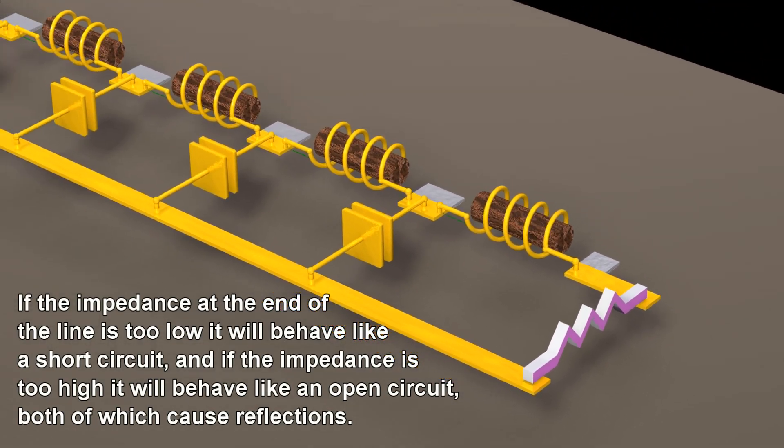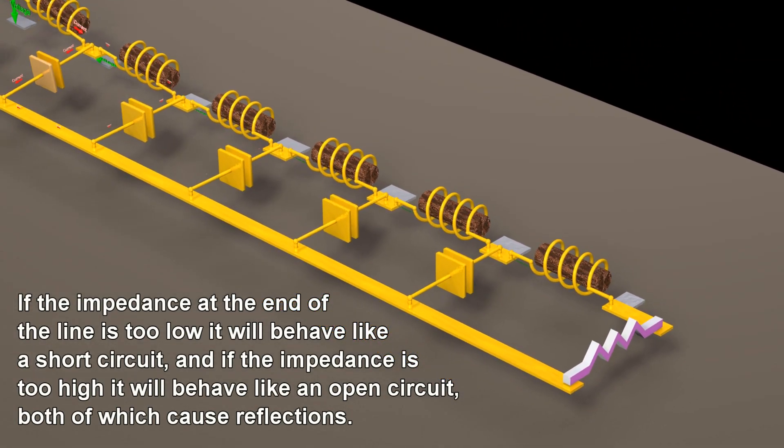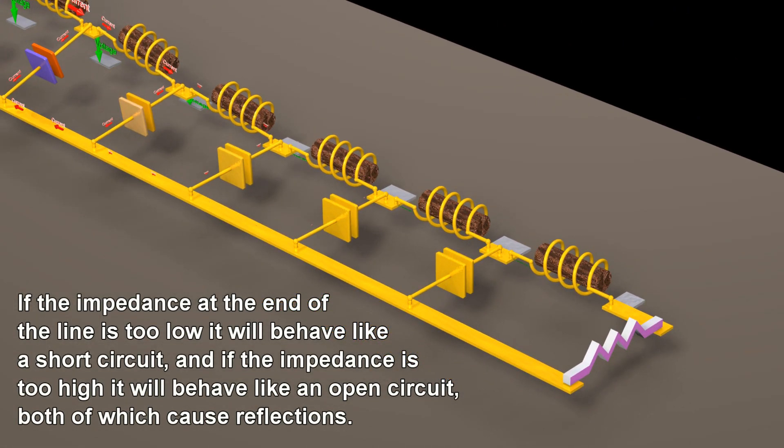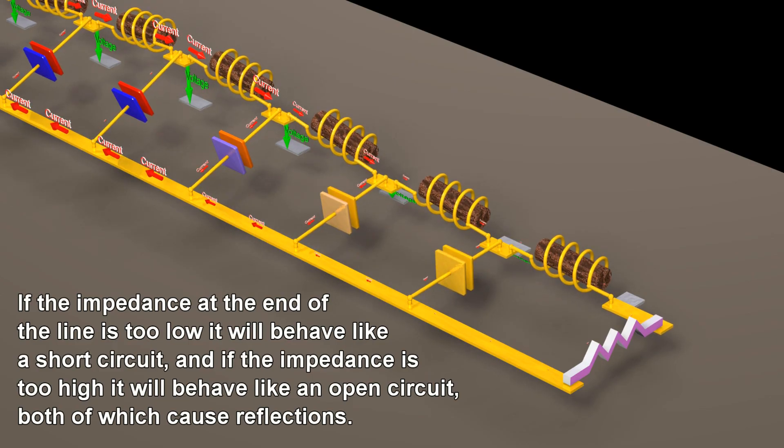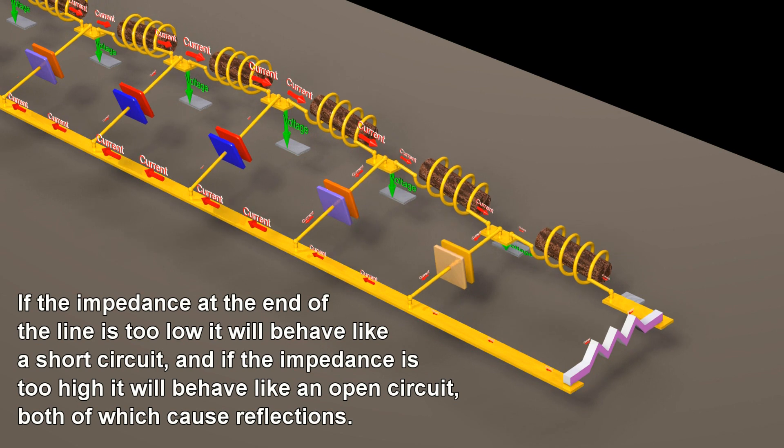If the impedance at the end of the line is too low, it will behave like a short circuit, and if the impedance is too high, it will behave like an open circuit, both of which cause reflections.